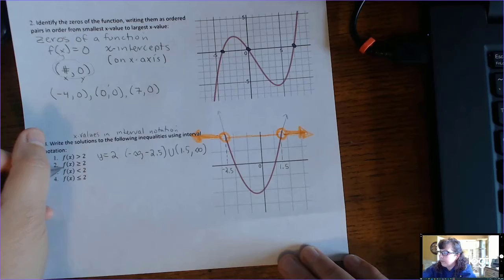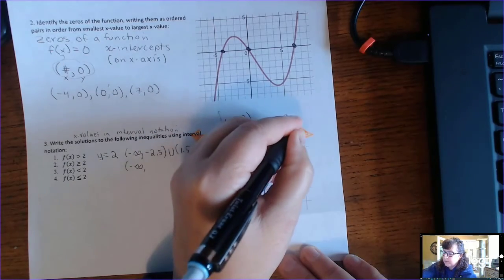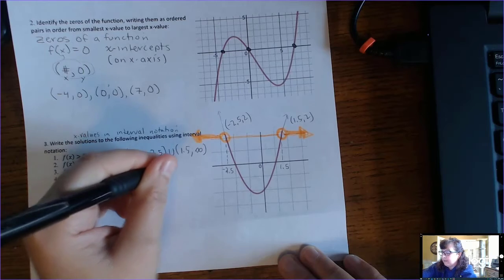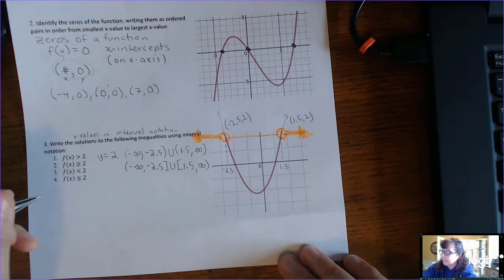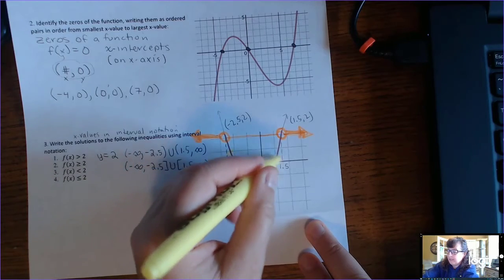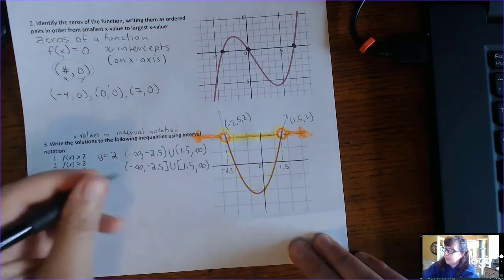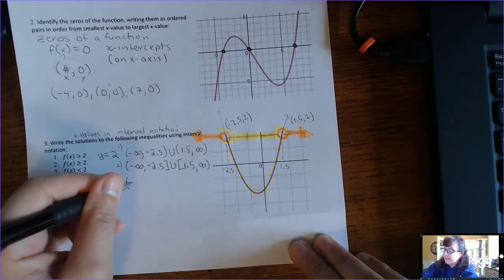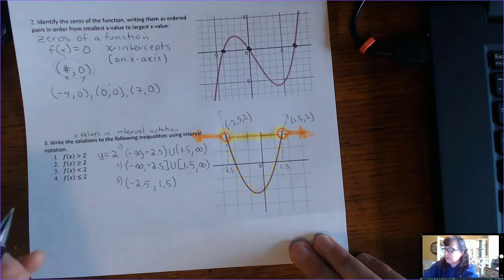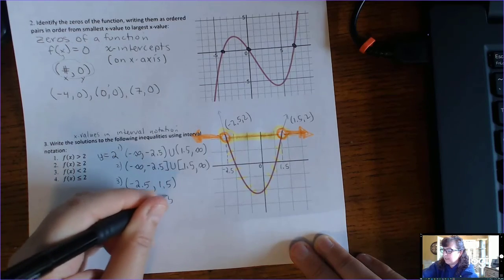For f(x) greater than or equal to 2: the ordered pair at the left intersection is negative 2.5, 2, and at the right is 1.5, 2. Since we now include where y equals 2, we change the parentheses to brackets at negative 2.5 and 1.5. Number 3, f(x) less than 2: those x-values are in between, so the answer is parentheses negative 2.5 comma 1.5 parentheses, because we don't include where it equals 2. Number 4, f(x) less than or equal to 2: we get to include the values that make it equal to, so change those to brackets.